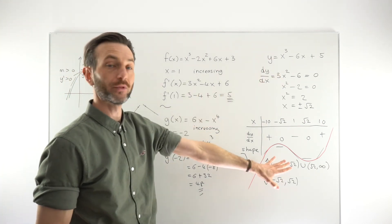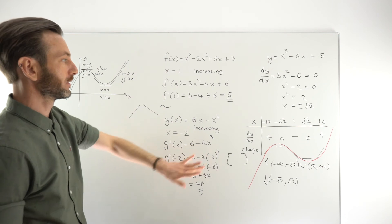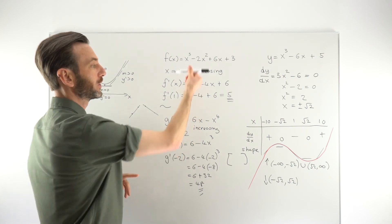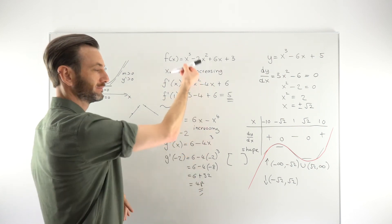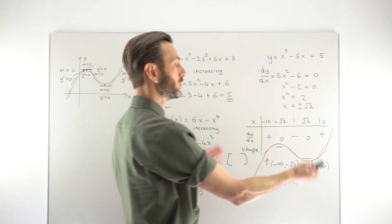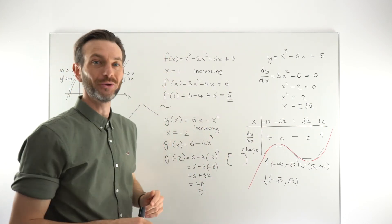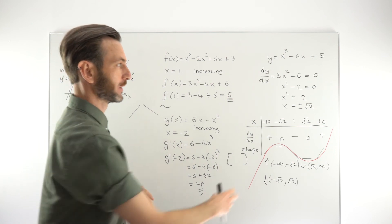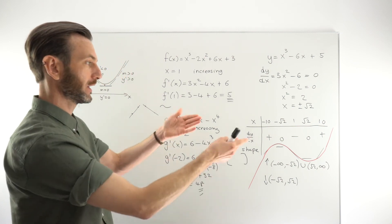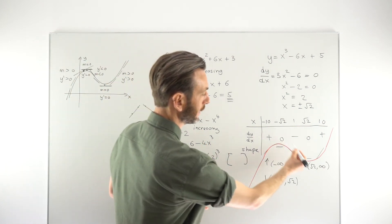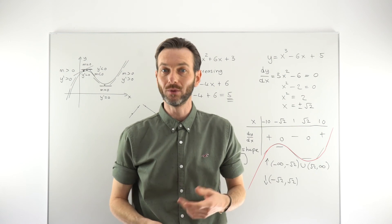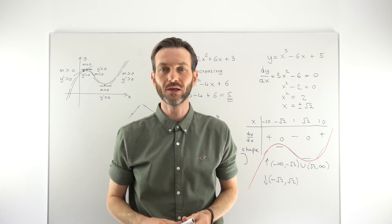This is a more complex version of the problem. The first two examples were relatively straightforward — once you're competent, you can evaluate increasing or decreasing at a single point within 20–30 seconds. This third one pulls in additional techniques we'll look at in other classes. I included it to take things further and show how this idea links back to the geometry, and the strong connection between derivative, gradient, and the geometry of functions.